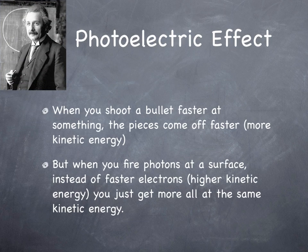Now the photoelectric effect — Einstein was also working on this, which had been discovered before: if you shine light on certain metals, you kick off electrons. The weird thing is that when you shoot a bullet faster at something with more gunpowder, the bits that come off have more kinetic energy. But when you fire more and more photons — more intense light — at a surface, instead of getting faster electrons with higher kinetic energy, you just get more electrons at the same old kinetic energy.